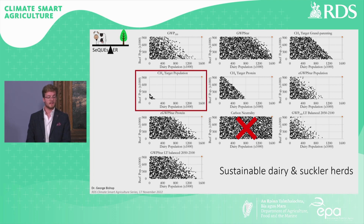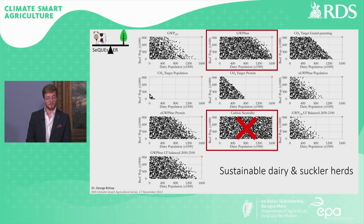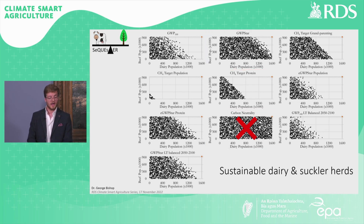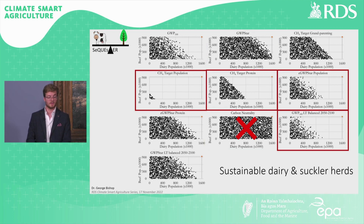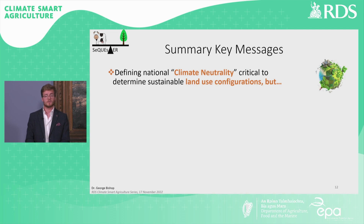Other than methane target population, all other definitions were able to achieve scenarios which maintained 2021 levels of suckler beef population. However, as these scenarios introduced larger populations of dairy cow numbers, they struggled to achieve high levels of suckler beef population. In fact, only carbon neutrality and GWP* were able to maintain 2021 levels of dairy population. We saw considerable decreases in dairy cow population for methane target population and protein, GWP* population and the long-term GWP100.